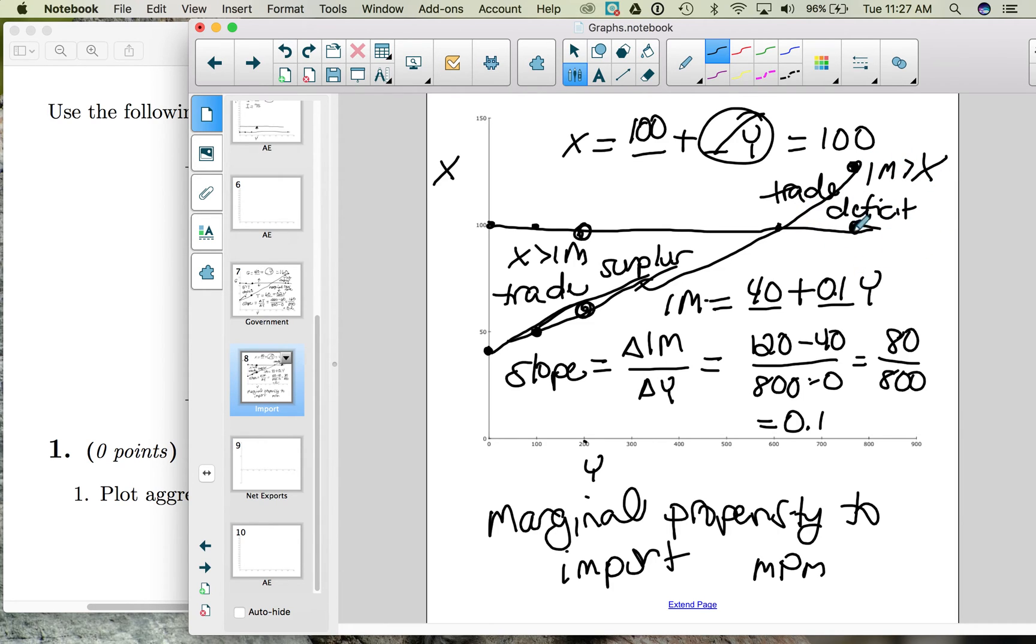So at high levels of income, we are more likely to have a trade deficit. At low levels of income, we're more likely to have a trade surplus. Now, we can take our exports and our imports, and we can combine them into net exports.